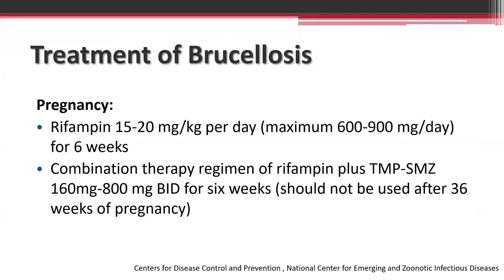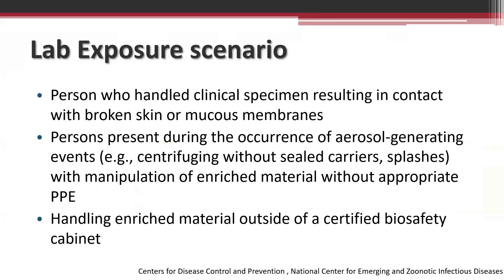In pregnancy, rifampin is the backbone at 15 to 20 mg/kg/day for six weeks. Co-trimoxazole can be added but should not be used after 36 weeks of gestation due to known risks associated with trimethoprim-sulfamethoxazole. For lab exposure scenarios, personnel handling clinical samples who had contact through broken skin, mucous membranes, or were present during aerosol-generating events such as centrifuging without sealed carriers, or handling enriched material outside a certified biosafety cabinet, are at risk.